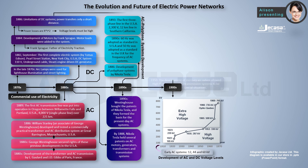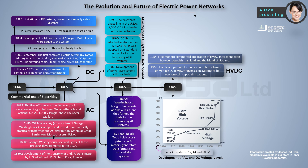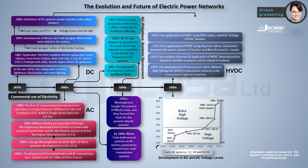In 1950, the development of mercury arc valves allowed high-voltage DC (HVDC) transmission systems to become economical in special situations. In 1954, the first modern commercial application of HVDC was the interconnection between the Swedish mainland and the island of Gotland. In 1972, the first application of HVDC using thyristor valves connected the power systems of Quebec and New Brunswick, Canada.